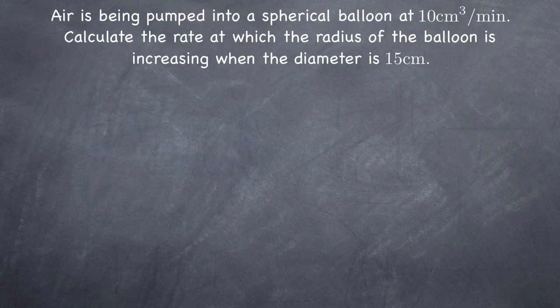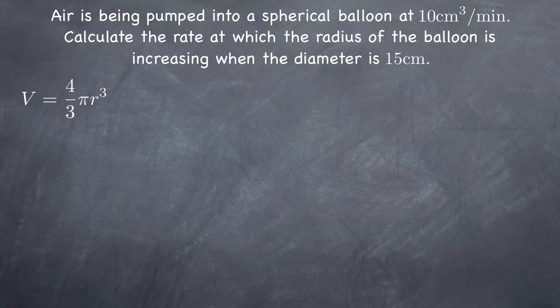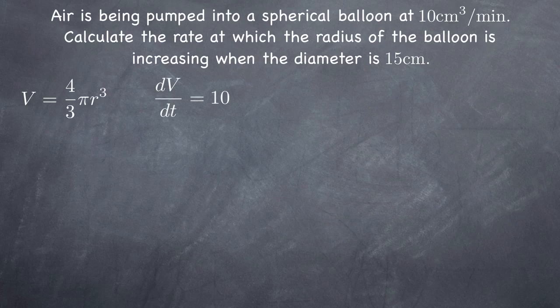Let's take a look at a common example to start getting a grasp on how this works. Here's the problem. Air is being pumped into a spherical balloon at 10 cubic centimeters per minute. Calculate the rate at which the radius of the balloon is increasing when the diameter is 15 centimeters. The first thing we know is that the balloon is spherical, which means we'll need to work with the equation for the volume of a sphere. We know how fast air is being added to the balloon, or put another way, we know how fast the volume of the balloon is increasing. This is the rate of change of the volume, which is not v itself, it's the derivative of v, or dv over dt.